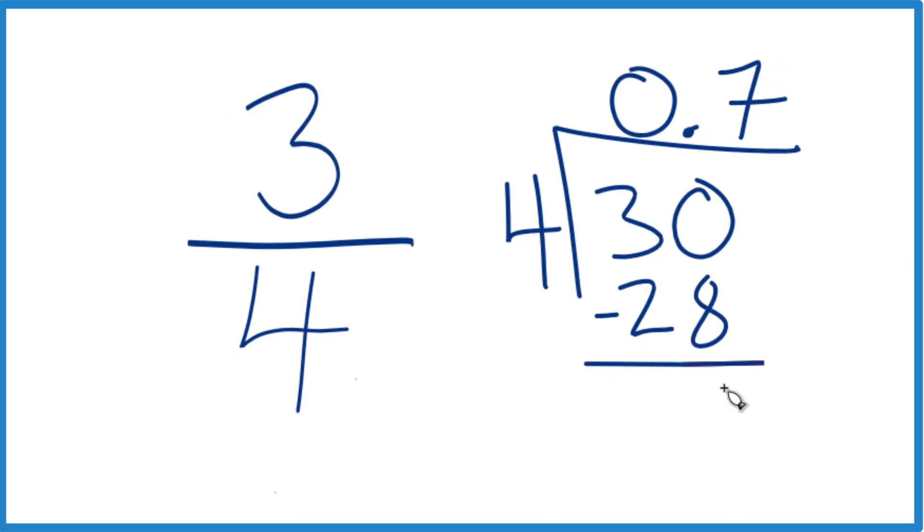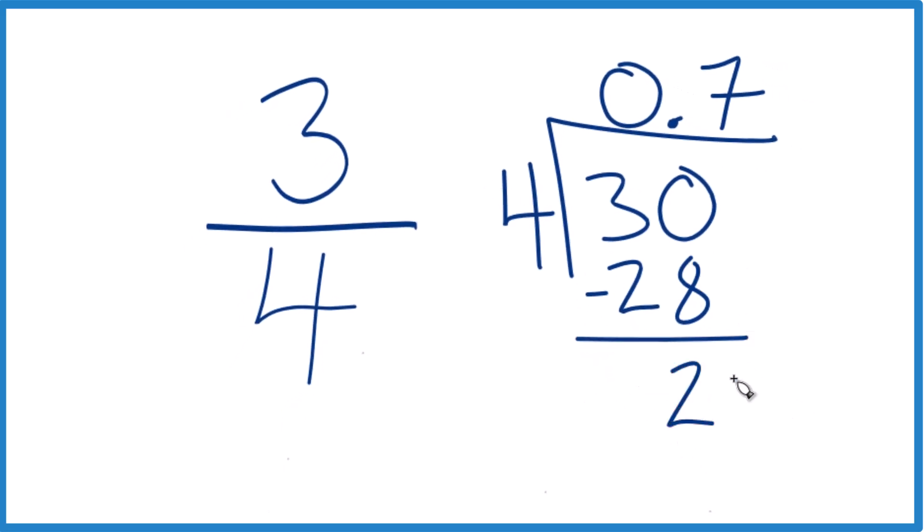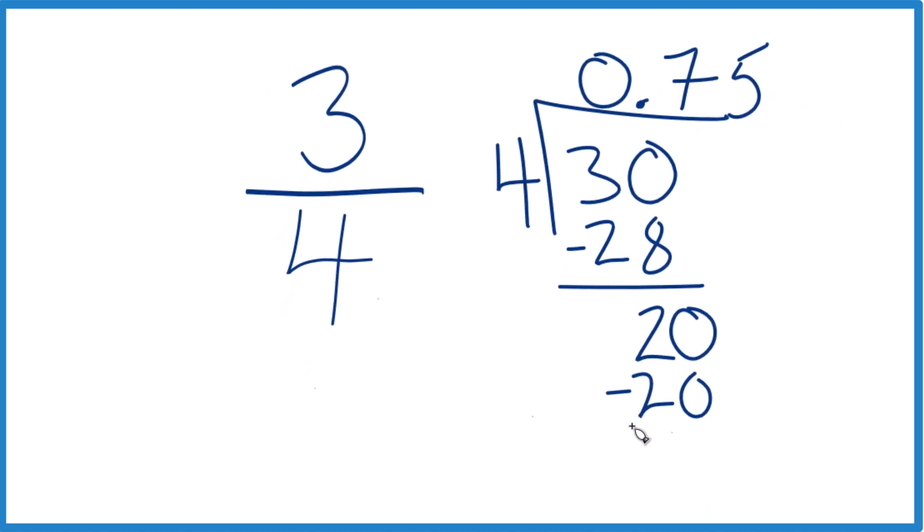We subtract, and we get 2. It doesn't go into 2, but we could call it 20 if we move over 1. 5 times 4, that's 20. Subtract, and we're done. No remainder.